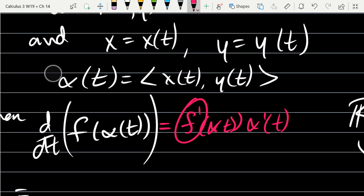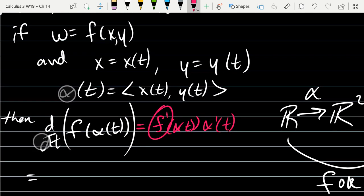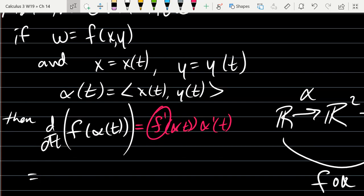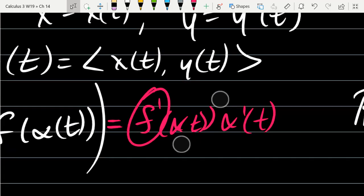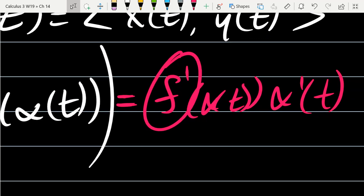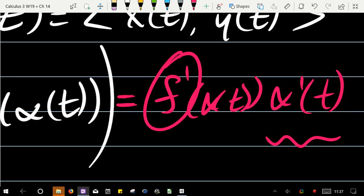All right, so a few things we're doing here. If I write f prime, what do I mean by derivative? Remember, the function f has two inputs. So right away, f prime doesn't make sense. Do I mean fx or fy derivative? So that's one issue. The other problem is f outputs numbers. α outputs vectors. So what you're looking at, if f prime actually existed, you'd be multiplying a number by a vector.